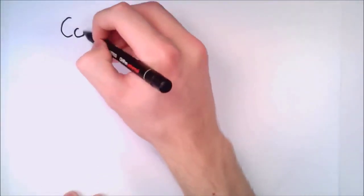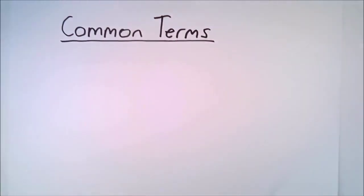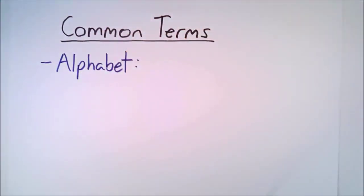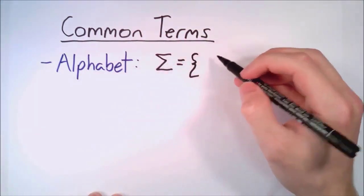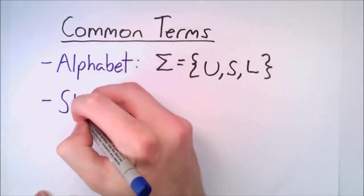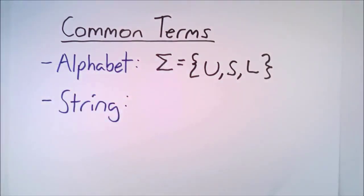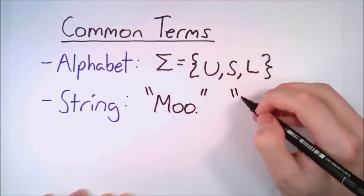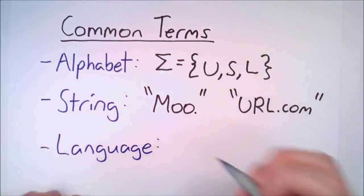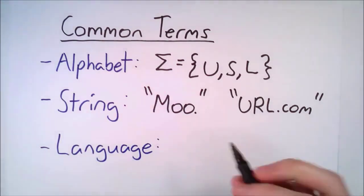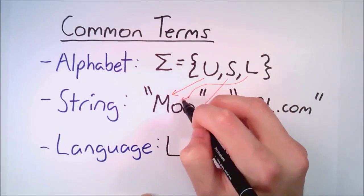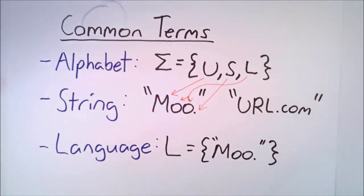In a more general sense, there are three extra words we often use in finite state automata. The first is called the alphabet of our automaton. This is just a list of all possible inputs that result in a transition. In our example, our alphabet is U, S, and L. The sentences we use to test this automaton are known as strings, which are sequences of inputs from our alphabet. Moo and URL.com are examples of this. Lastly, we have a language. This is all the possible strings that are accepted by our automaton. Moo is one of the many strings in this language. But although URL.com is a string, it is not in our language because it was not accepted by our automaton.